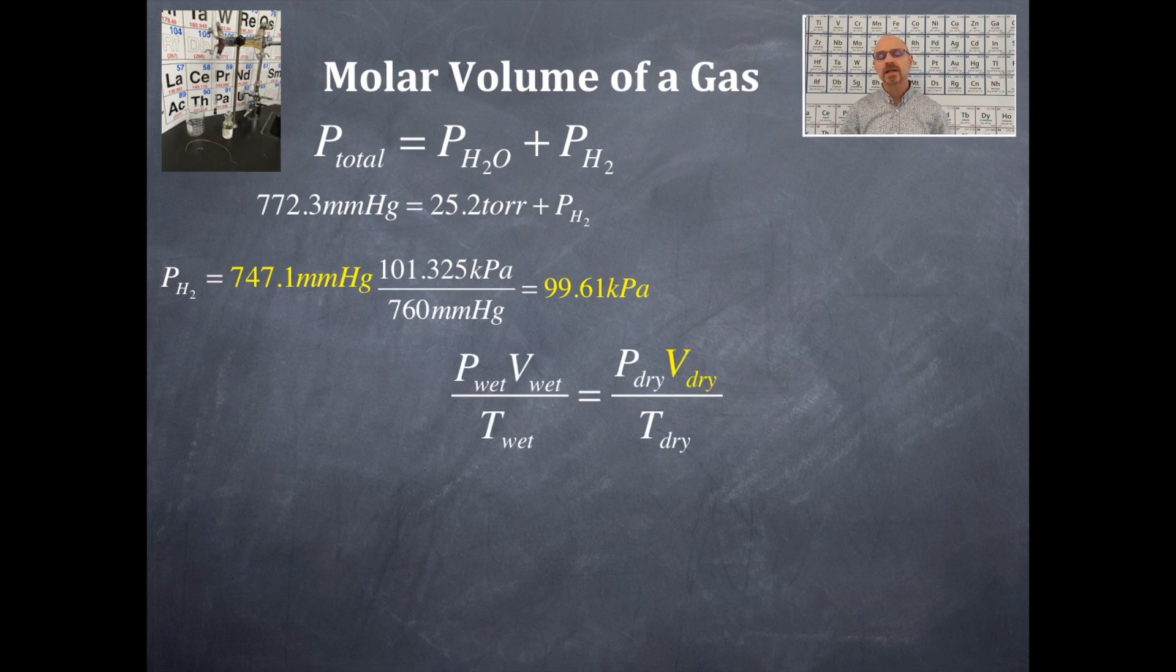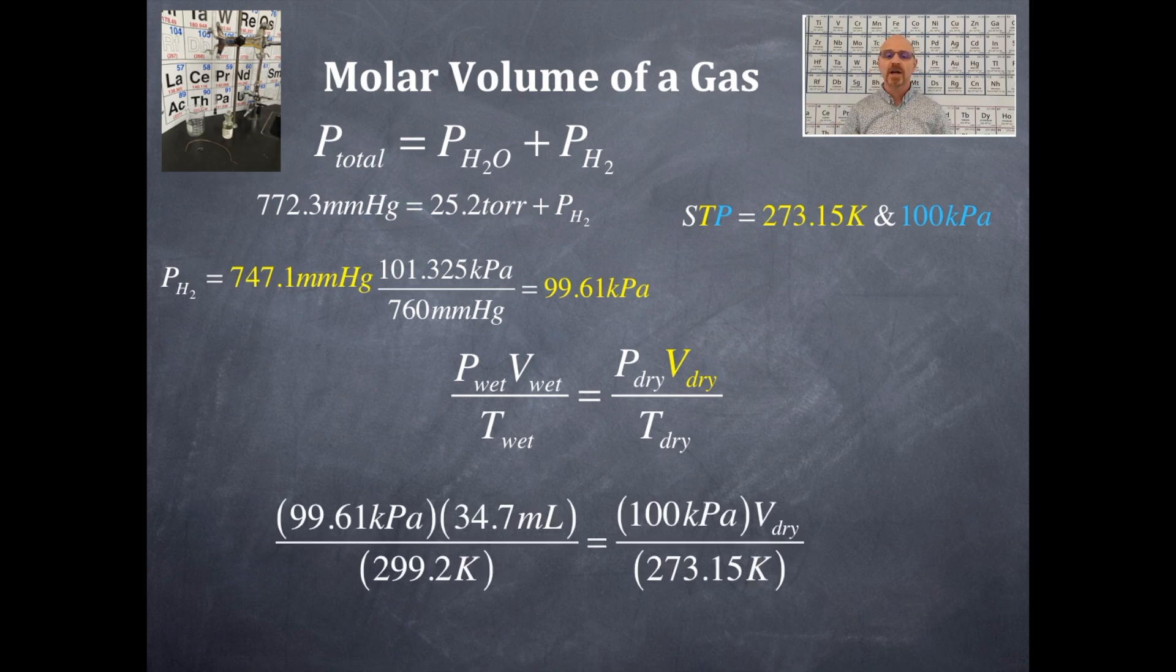Okay, so here's my equation here. And this whole entire equation is the combined gas law. So on the left-hand side of this, I have the conditions under wet conditions. That's the wet gas. And on the dry conditions on the right-hand side, I'm solving for the volume of the dry hydrogen gas that's highlighted in yellow there. STP conditions, it's standard temperature and pressure. The standard temperature is 273.15 Kelvin, and the standard pressure is 100 kilopascals exactly. There are infinite number of significant figures for both of those.